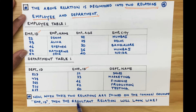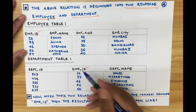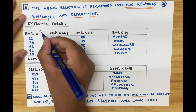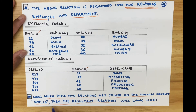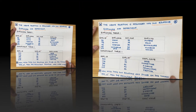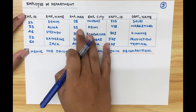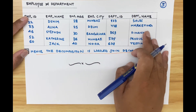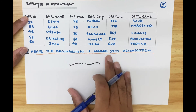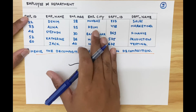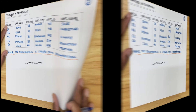The employee table contains employee ID, employee name, employee age, employee city, and department ID. The department table contains employee ID and department name. When these two relations are joined on the common column — employee ID — the resultant relation will contain employee ID, employee name, employee age, employee city, department ID, and department name. Hence the decomposition is lossless because no information was lost.